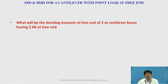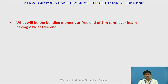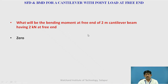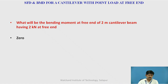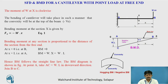What will be the bending moment at the free end for a 2-meter cantilever beam having a 2 kN load at its free end? Pause the video and try to write the answer. The answer is zero, because the bending moment equals load multiplied by its perpendicular distance, and since the load is at the free end, the distance is zero. Therefore, load into zero equals zero.